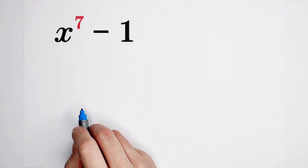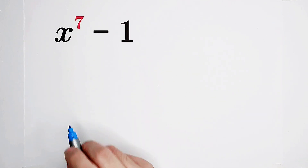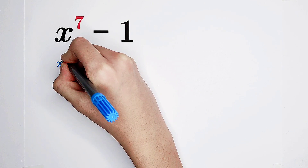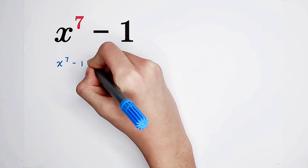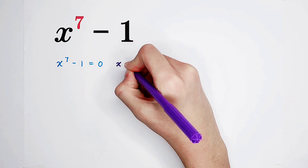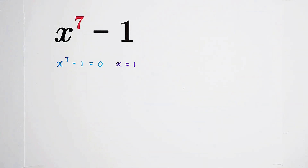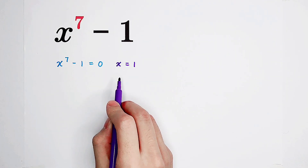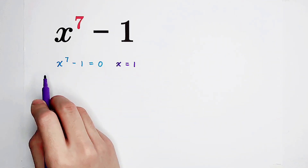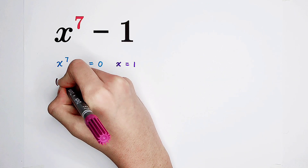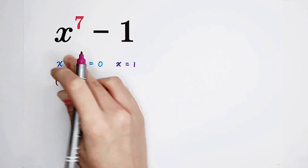So, what shall we do? Firstly, if we have a look at this equation — x to the power of 7 minus 1 equals 0 — then we can immediately notice that x equals 1 is a solution. So that implies x minus 1 is a factor of our left-hand side.